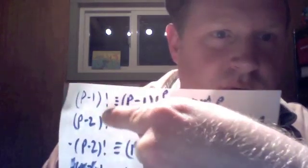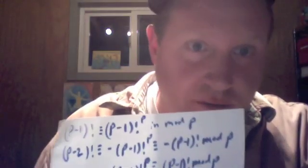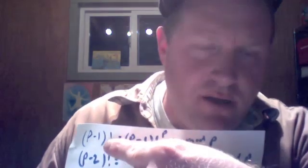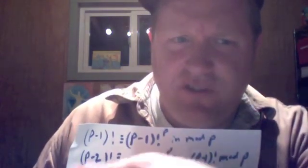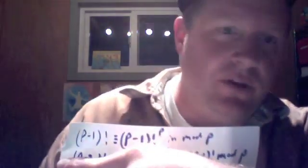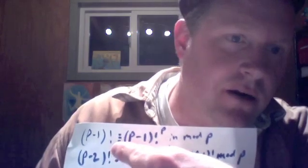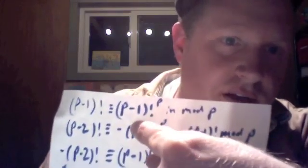What do we know? Why do I say that (p-1)! is equivalent to (p-1)! to the power of p in mod p? I know that from Fermat's Little Theorem, which I did a video on. This is our A. The mod p should be on this side — you'll have to understand that the equivalence symbol here is in mod p. So what this is saying is: (p-1)! mod p is equivalent to (p-1)! to the power of p. A is equivalent to a to the power of p if a is relatively prime to p in mod p.